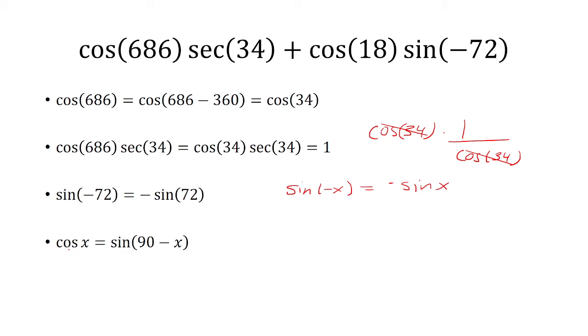And the other thing we know is that cosine of x is equal to sine 90 minus x. So if I plug in cosine of 18, that's the same thing as sine of 90 minus 18 equals sine of 72.